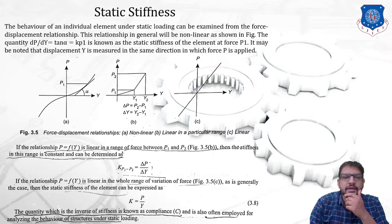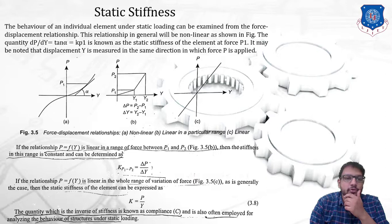In the diagram you can see three different cases: the first case is nonlinear, the second case is linear in a particular range, and the third is totally linear. This relationship in general will be nonlinear as shown in figure A. The quantity dp/dy — that is, force upon displacement — equals tan alpha, which represents stiffness.